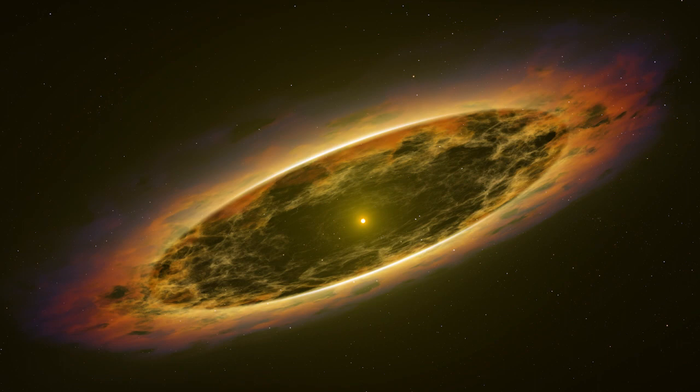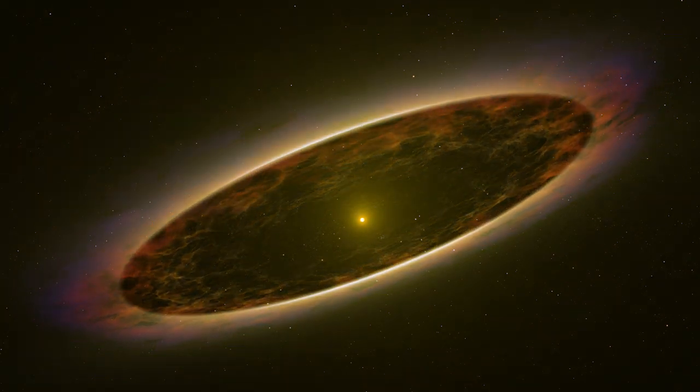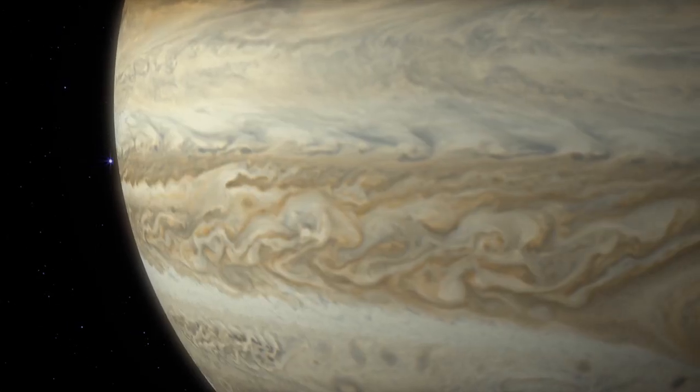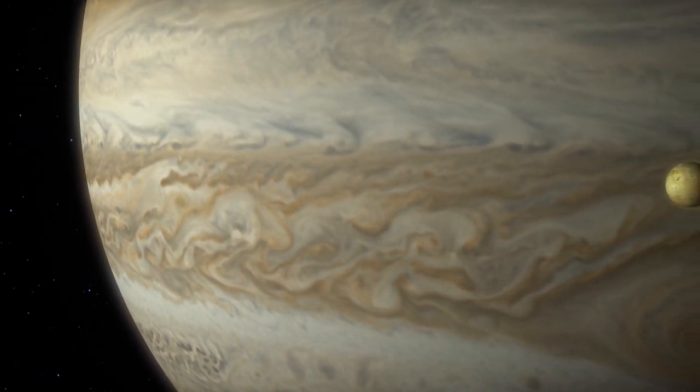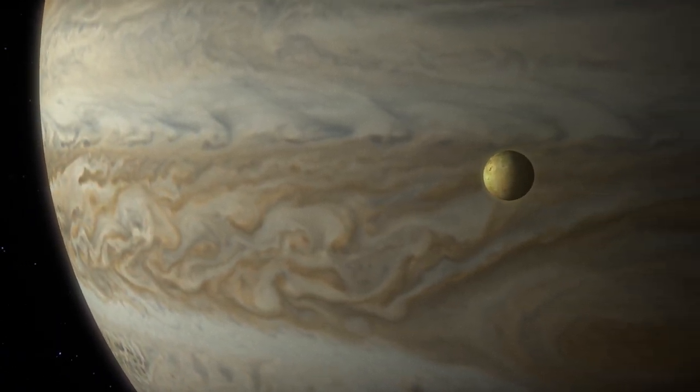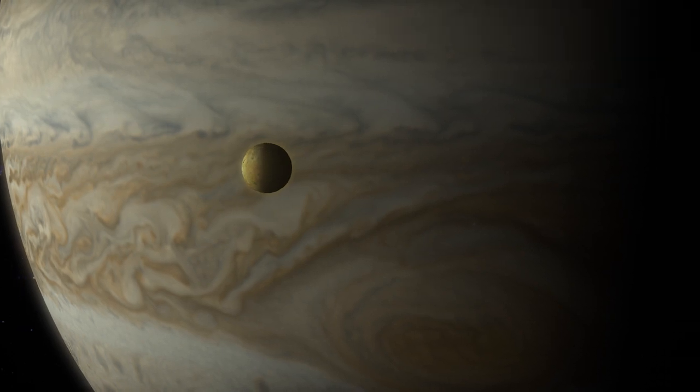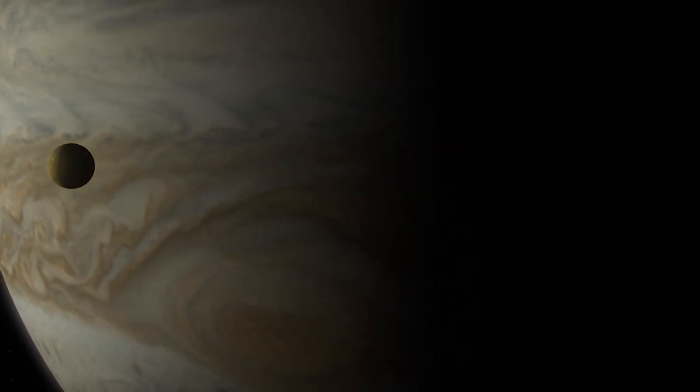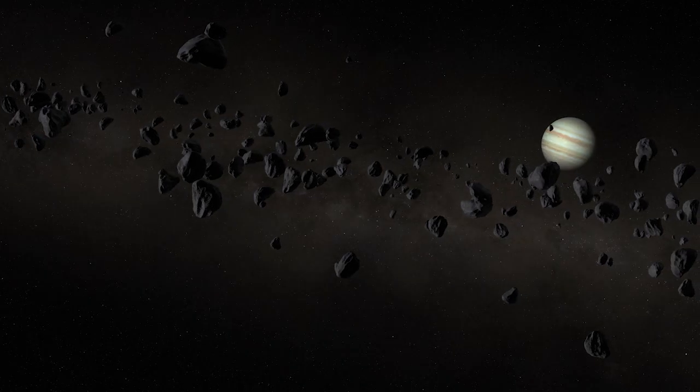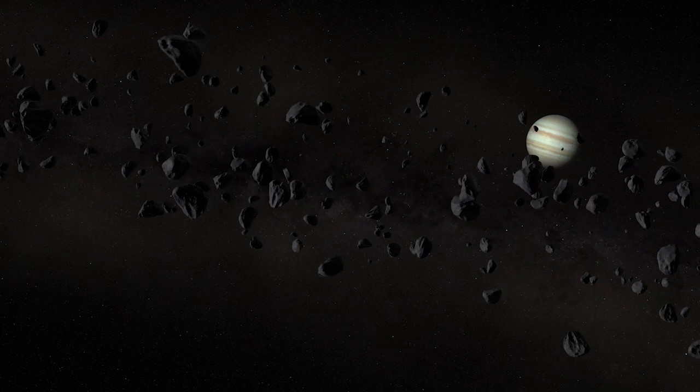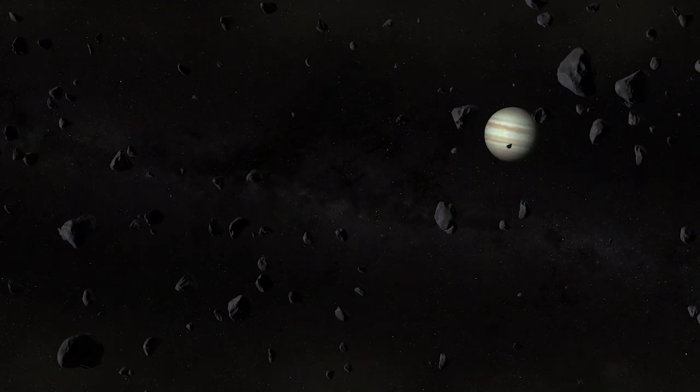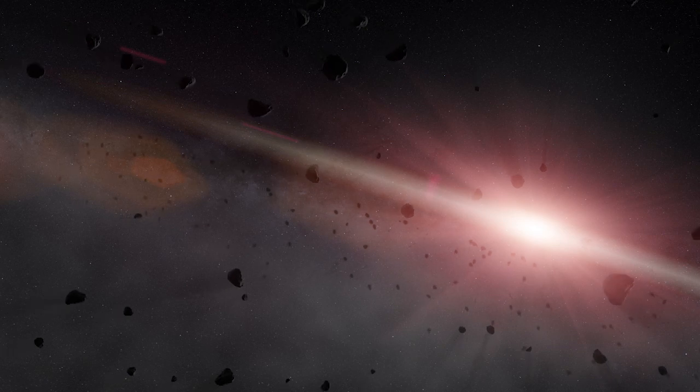But the solar system is far from finished. Jupiter most likely forms near its outer edge. But just 500 million years after the sun ignites, some believe that it slowly moves inward. Its massive gravity ripples the asteroid belt, disrupting countless asteroids and comets, bringing them toward the sun.